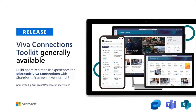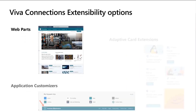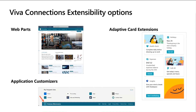There are three different extensibility options: web parts, application customizers, and adaptive card extensions. Adaptive card extensions are for the mobile experiences and are rendered in a native mobile way using the native mobile framework — super fast and targeted for mobile usage. Web parts and application customizers are similar to what we've had in SharePoint in the past, so we're building on an existing extensibility model. If you've done application customizers or web parts in SharePoint Online, you'll know how to do them in Viva Connections as well.